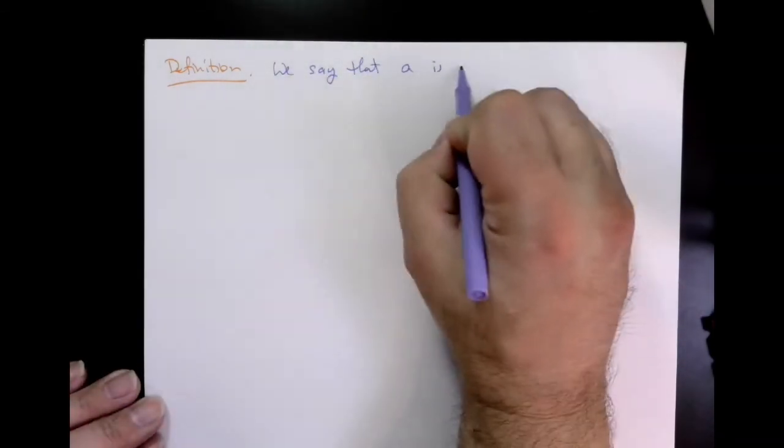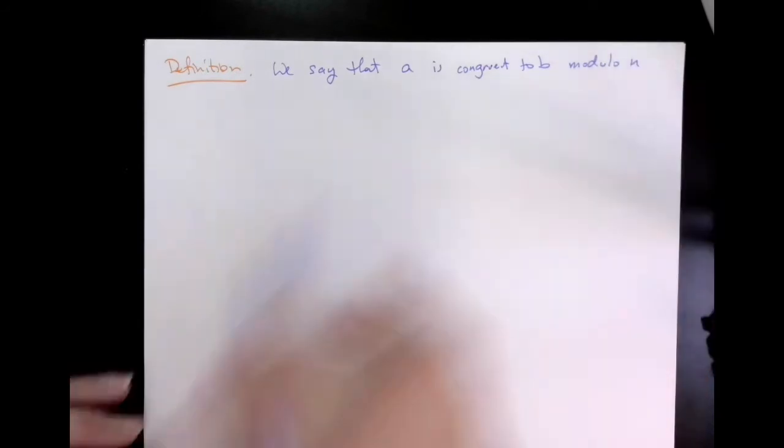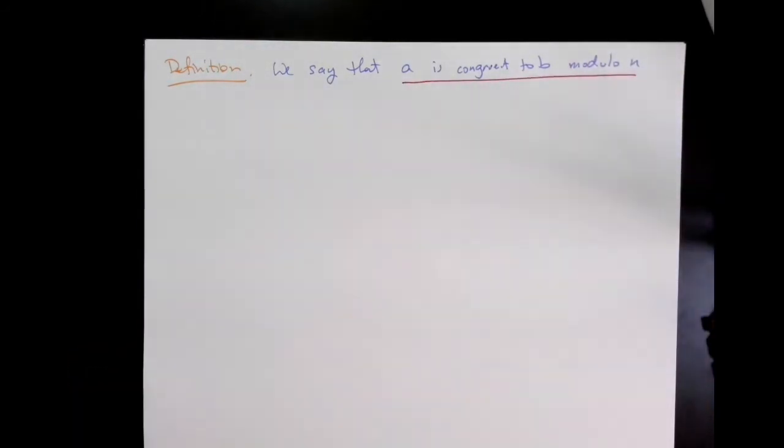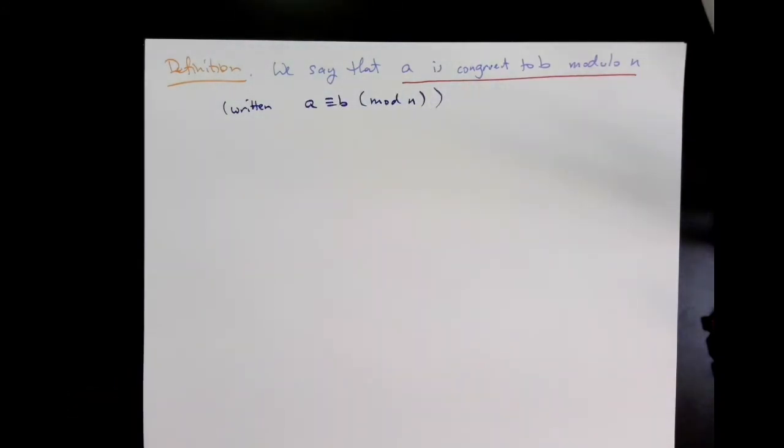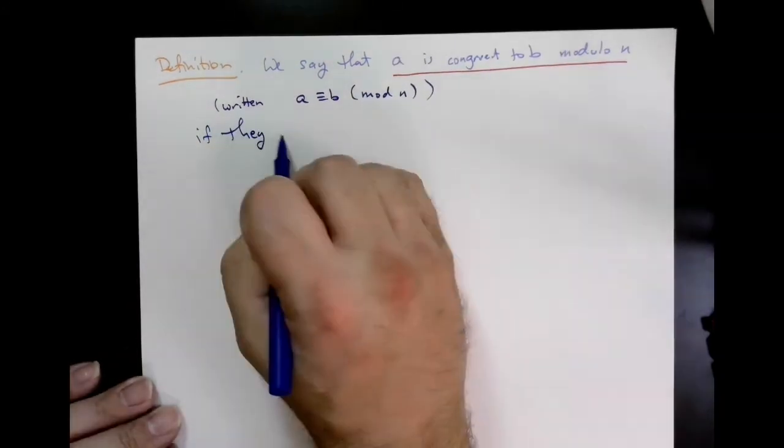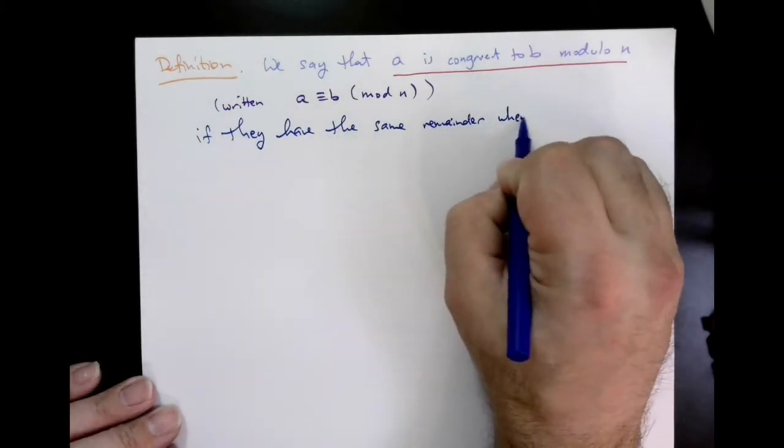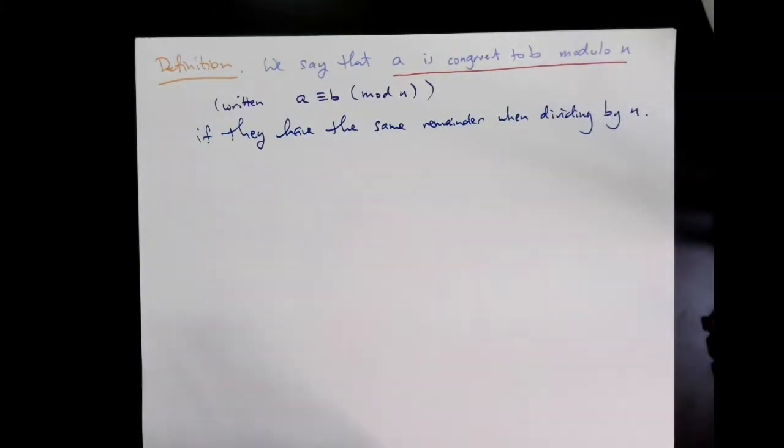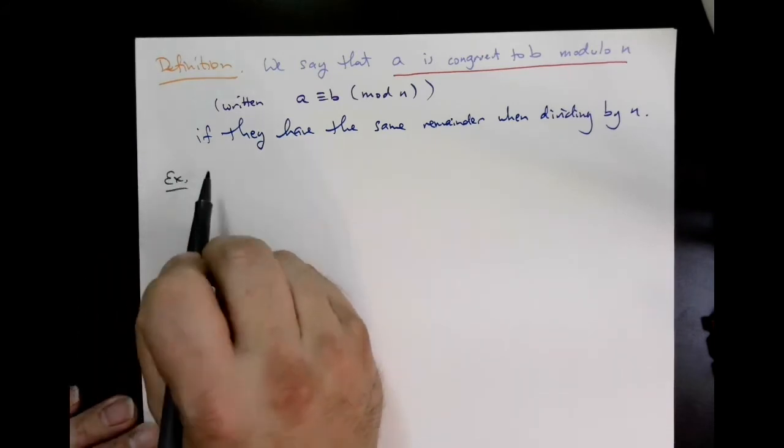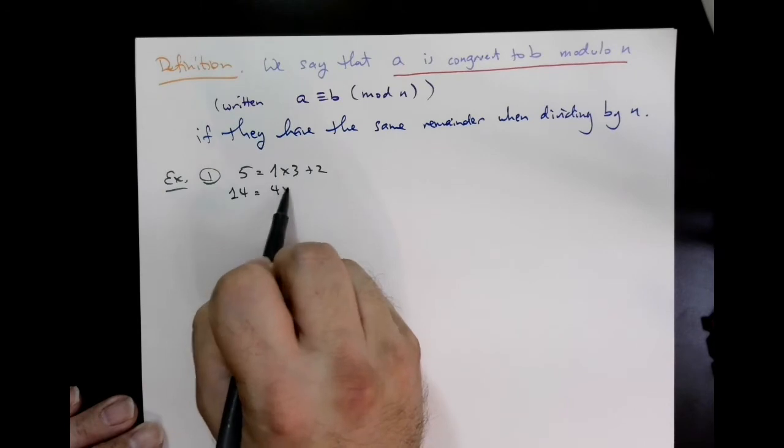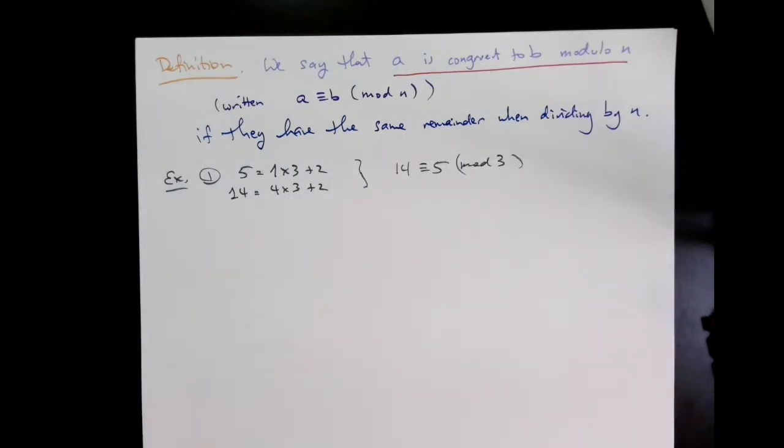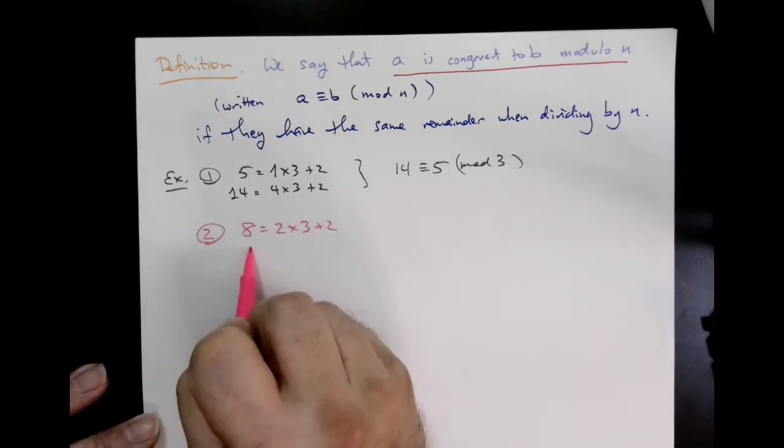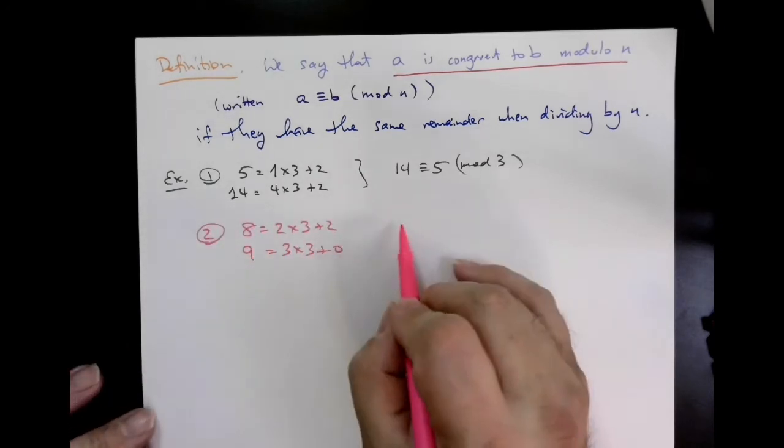Okay, we say that A is congruent to B modulo N, written A triple equal sign B mod N, if they have the same remainder when dividing by N. So here's some examples. We know that 5 equals 1 times 3 plus 2, and 14 is 4 times 3 plus 2. So they both have a remainder 2, and so we say that 5 is congruent to 14 modulo 3. Also, 8 is 2 times 3 plus 2, and 10 is 3 times 3 plus 1. So 8 and 10 are not congruent modulo 3. They have different remainders.